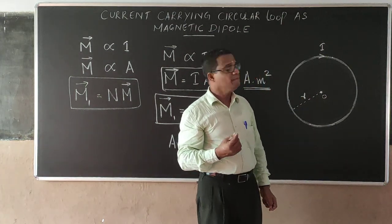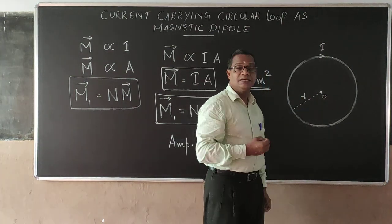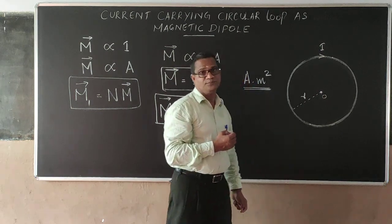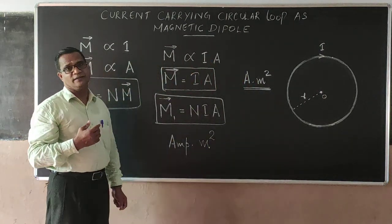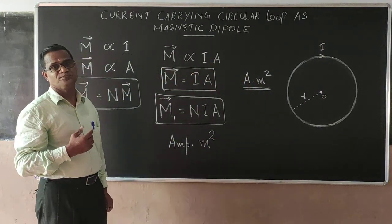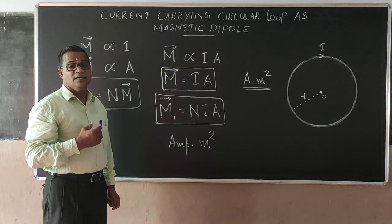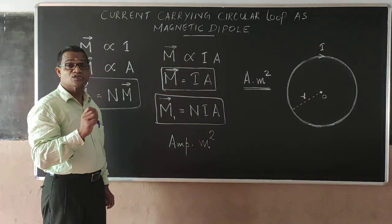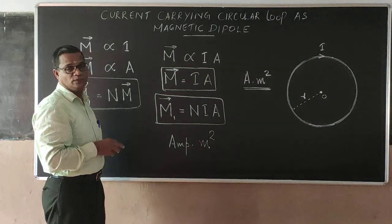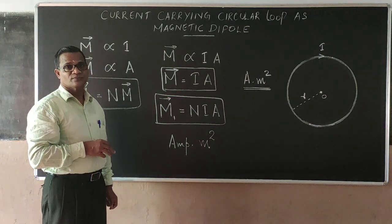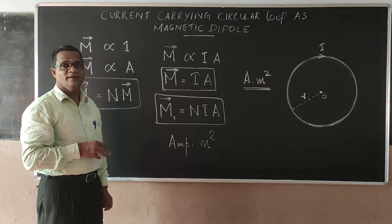So it is easy to find the direction — use the right-hand screw rule to determine the direction of the magnetic dipole moment.